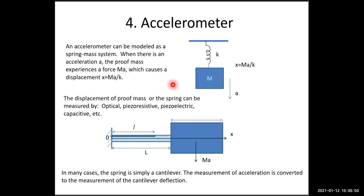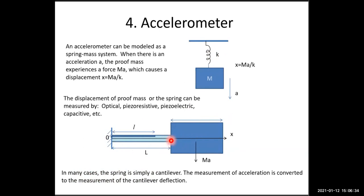So the measurement of acceleration is converted to the measurement of displacement of the mass on the spring. The displacement of the mass and spring can be measured using optical, piezoelectric, capacitive, and other sensing methods. In many cases, the spring is a cantilever beam and the mass is attached to the end of the cantilever, so the measurement of acceleration is converted to the measurement of cantilever deflection.